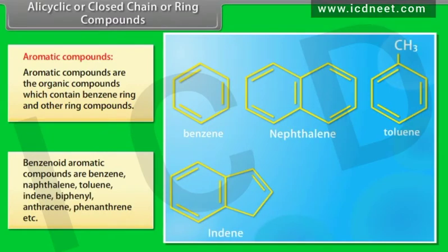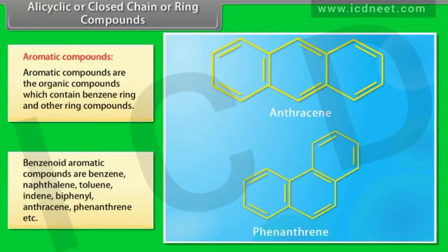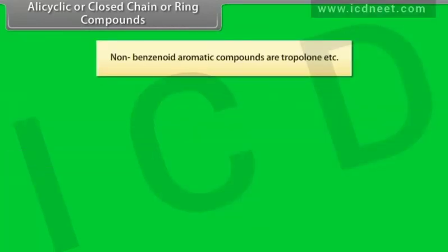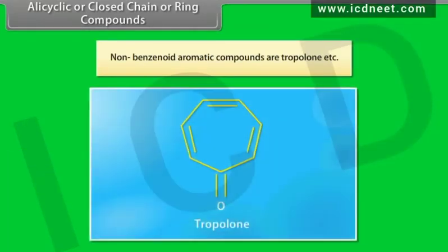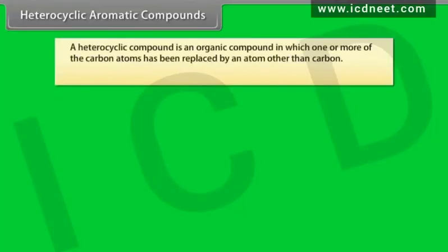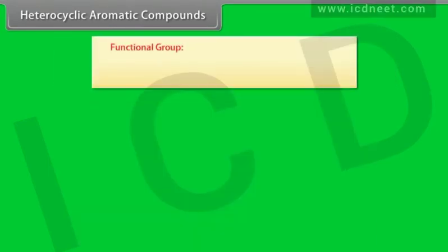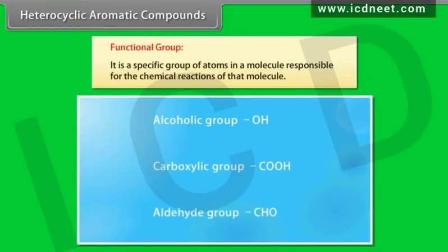Benzenoid aromatic compounds include benzene, naphthalene, toluene, indene, biphenyl, anthracene, phenanthrene, etc. Non-benzenoid aromatic compounds include tropone, etc. A heterocyclic compound is an organic compound in which one or more carbon atoms have been replaced by an atom other than carbon; typical heteroatoms are nitrogen, oxygen, and sulfur. A functional group is a specific group of atoms in a molecule responsible for the chemical reactions of that molecule.